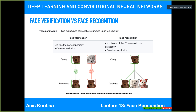Face recognition is more general. You have K persons stored in the database and perform a one-to-many lookup. Given a new image, you check it against all the others until you find the most similar one, and then determine that this new object corresponds to that stored object. That is the difference between face recognition and face verification.